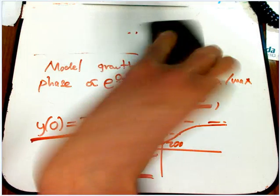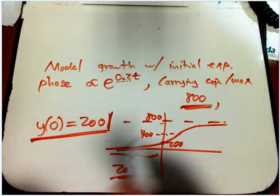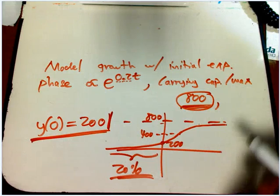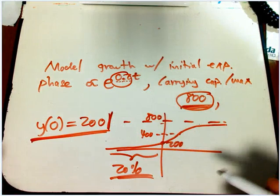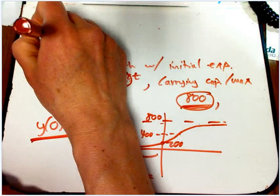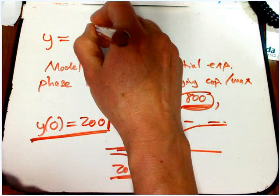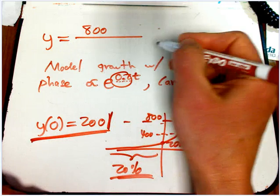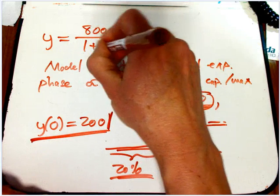Well, this tells us A, done. This tells us R, done. That's a nice thing. So, we know that this is just Y equals 800 over 1 plus B, E to the minus 0.2T.